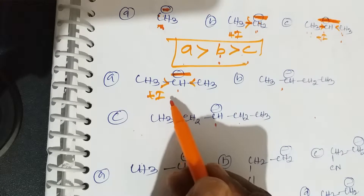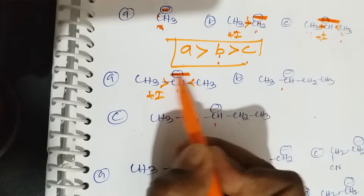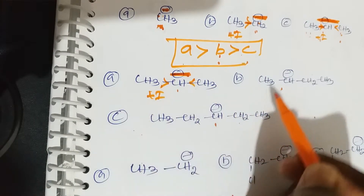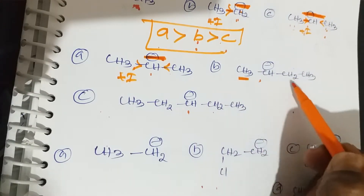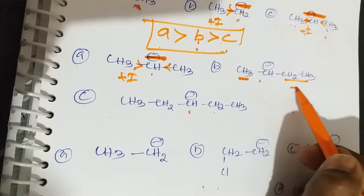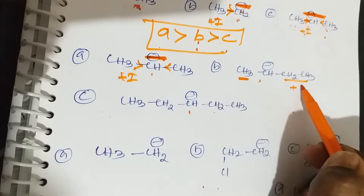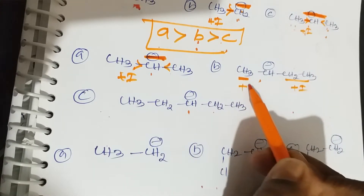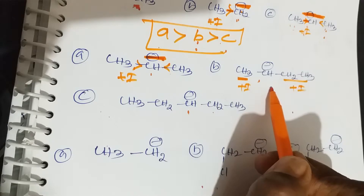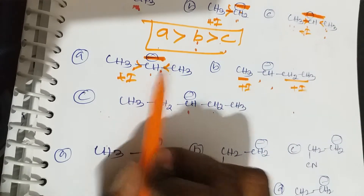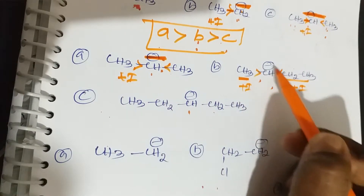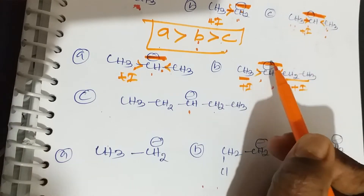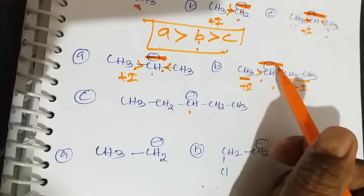The electron-releasing group causes the negative charge to slightly increase on carbon. In the second example, compound B has one methyl group on the left and one ethyl group on the right — both are +I groups, both are electron-releasing groups. So compared to compound A, B has more negative charge on carbon.